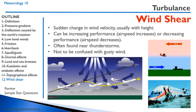Wind shear is the sudden change in wind velocity, usually with height. It can mean increasing performance — your airspeed increases because of an increasing headwind or decreasing tailwind. Or it can mean decreasing performance — you go from a headwind to a tailwind and your airspeed decreases. Wind shear is often found near thunderstorms and should not be confused with gusty winds.